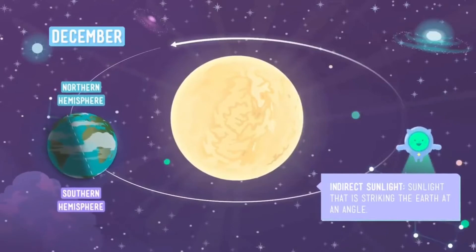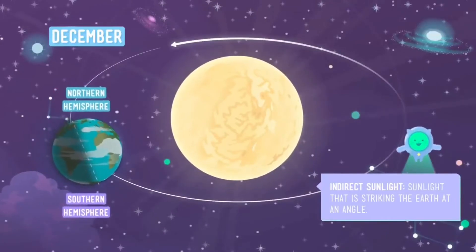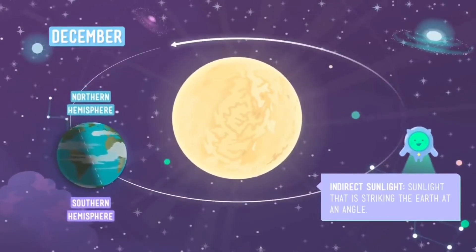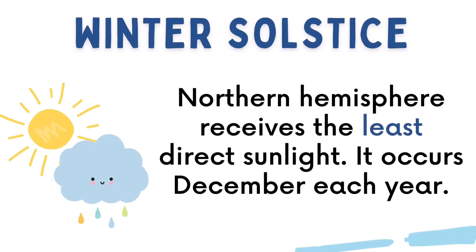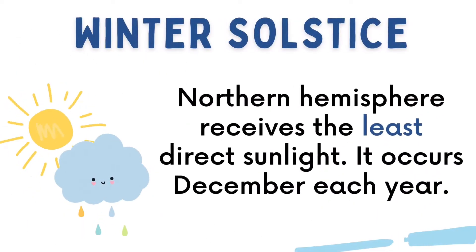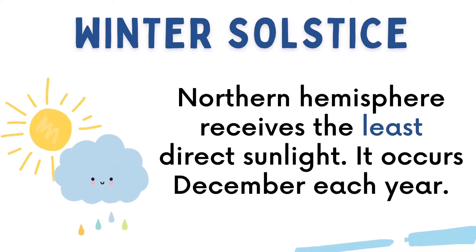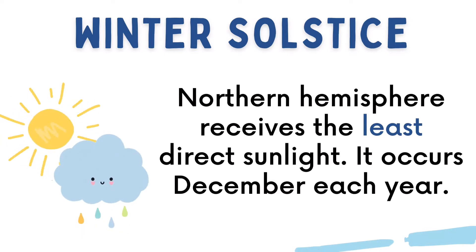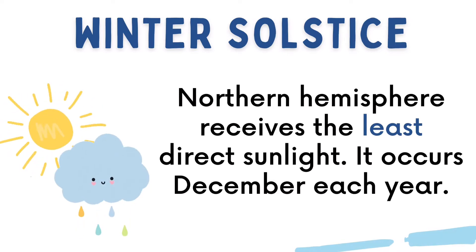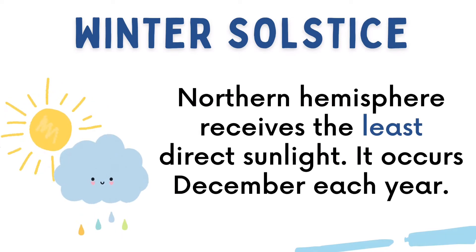On the other hand, this is how the Earth looks like during winter solstice. The Northern Hemisphere receives the least direct sunlight. It occurs in December each year. Longer nighttime can be experienced during this period. Generally, the Southern Hemisphere receives the most direct sunlight, which means that it is the beginning of the summer solstice in that region.